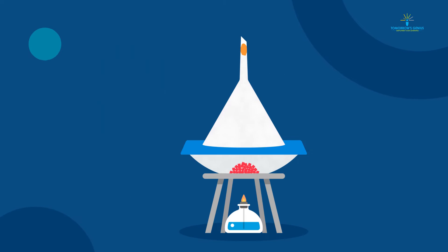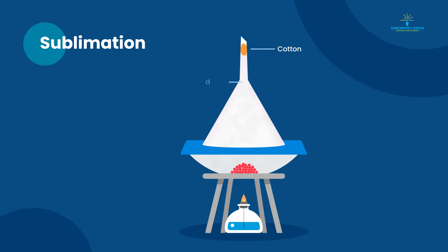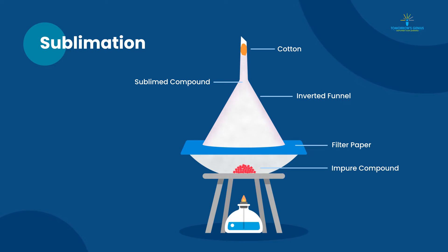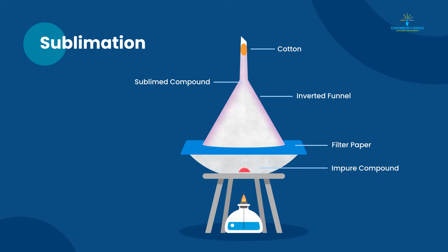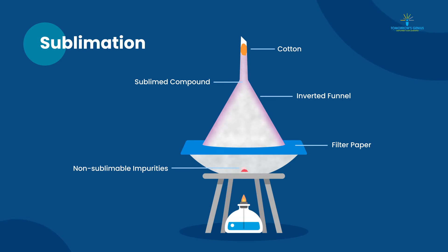The second one is sublimation. Sublimation is performed when the compound gets converted into the gaseous state without passing through the liquid state. An example is iodine.